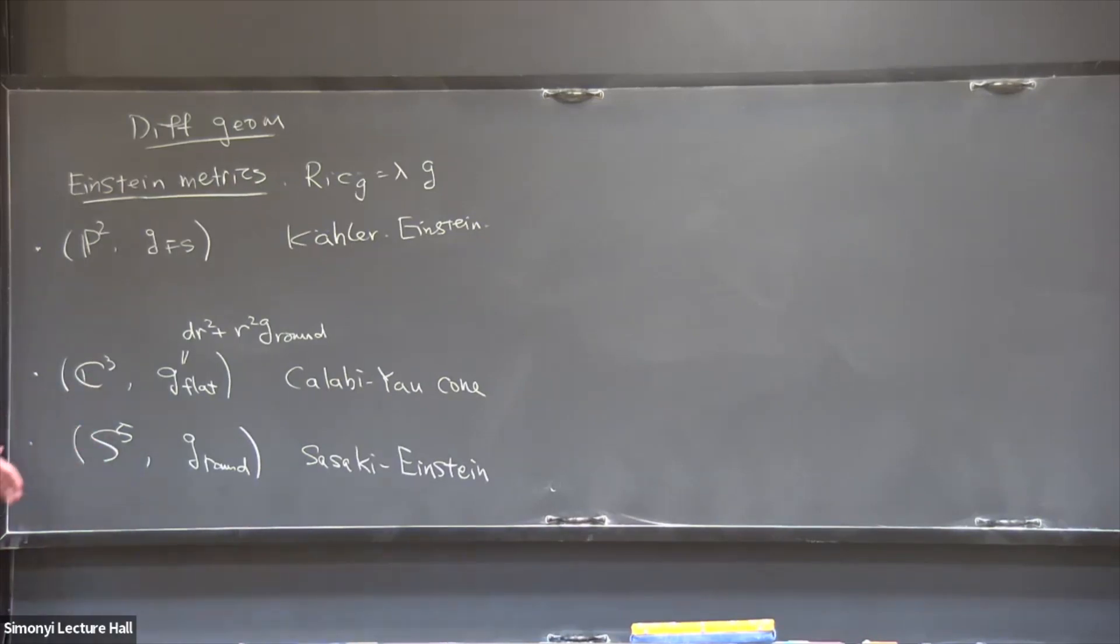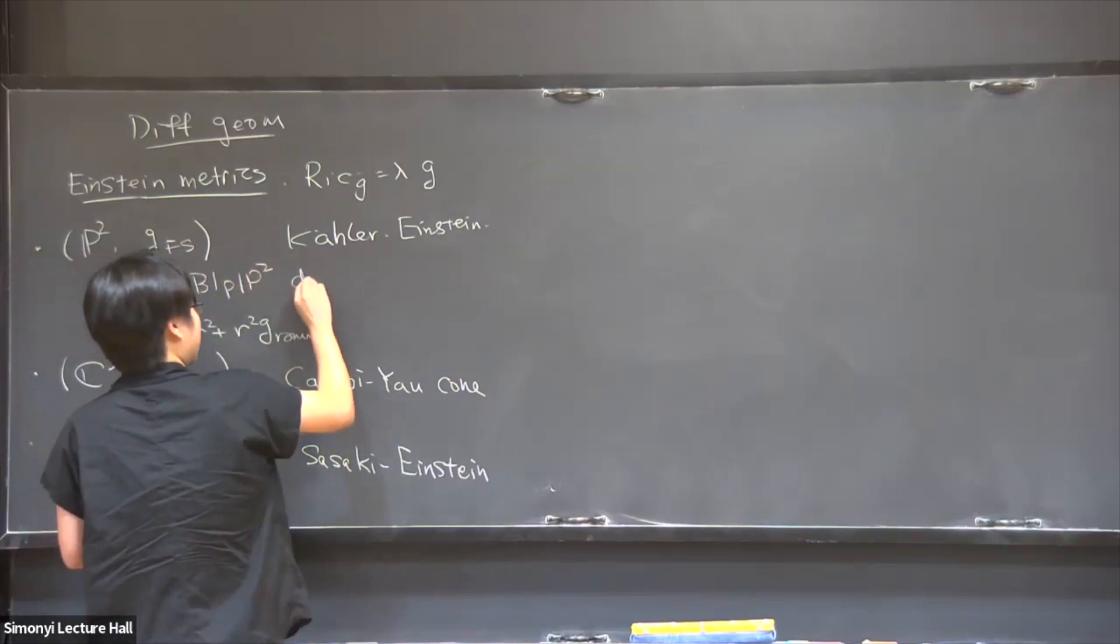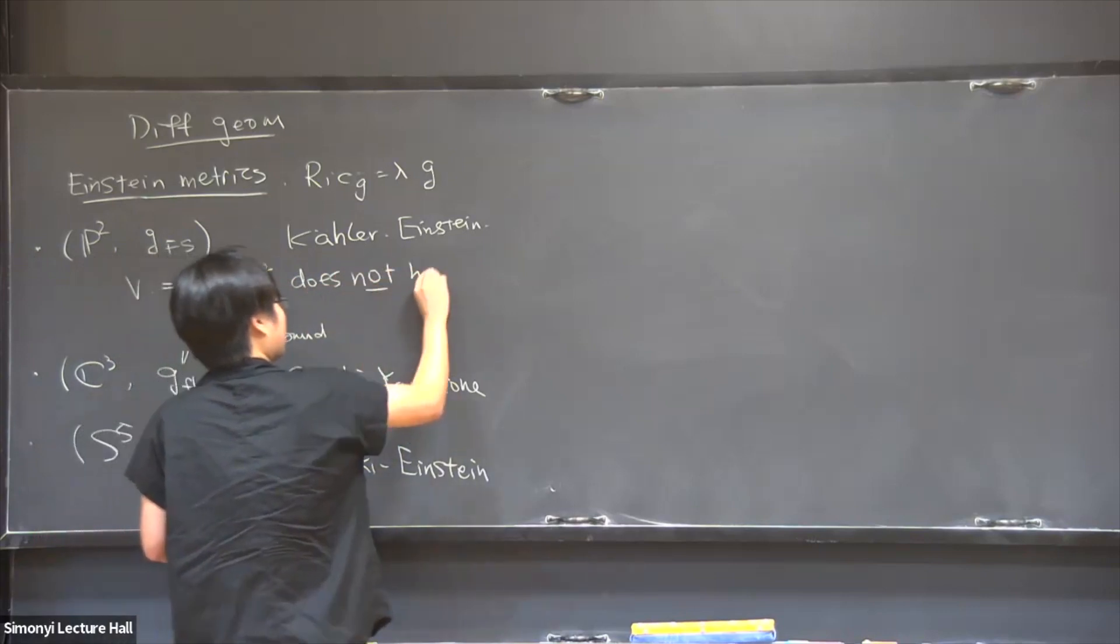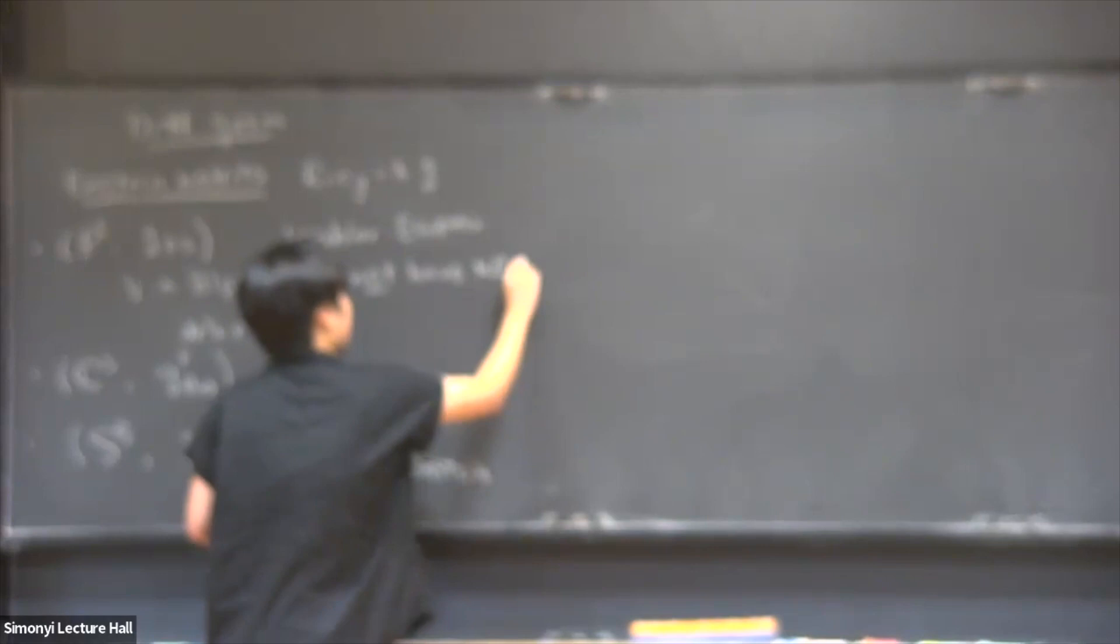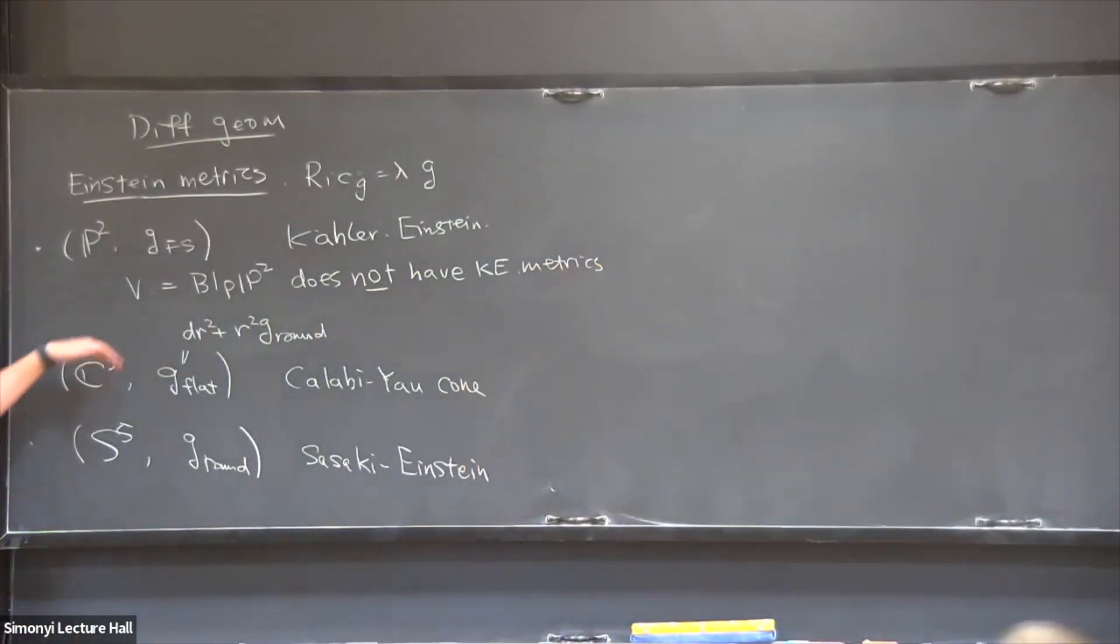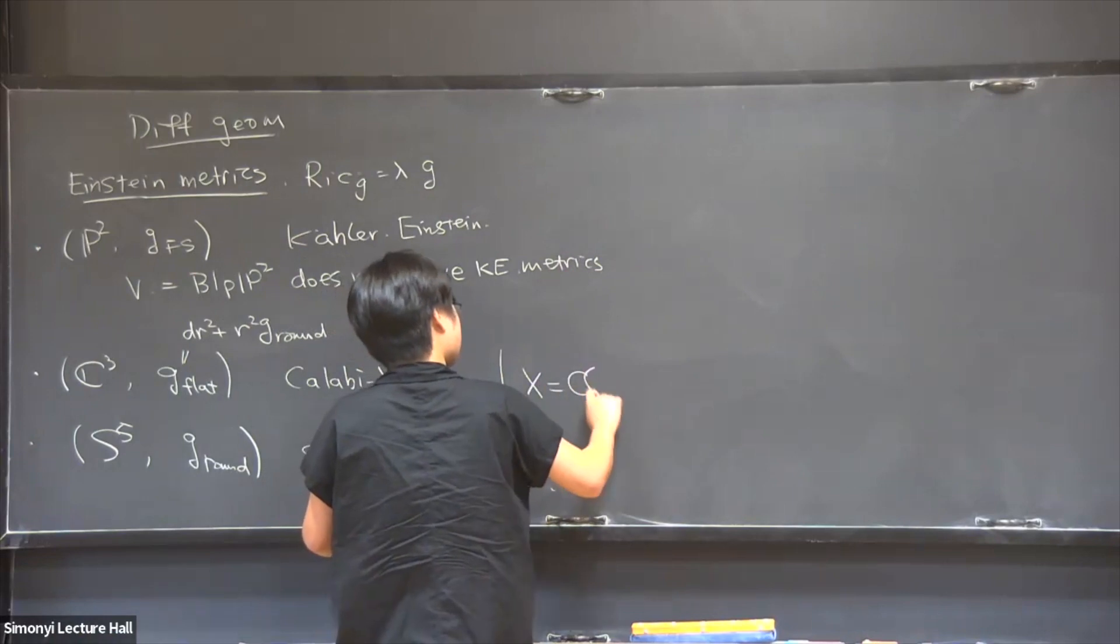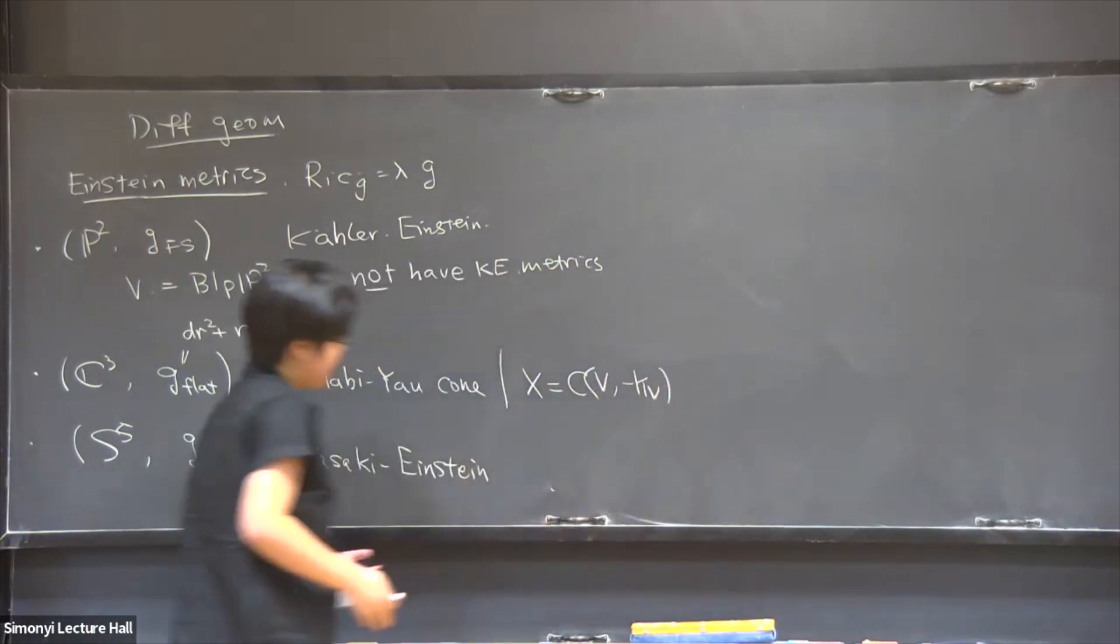So the underlying Riemannian structure is an odd-dimensional real manifold. In this case being S⁵, equipped with the round metric. So it's a cone in the sense that this metric in polar coordinates is really a metric cone over S⁵. So in polar coordinates, you can write down something like this. The Sasaki-Einstein metric, so the Sasaki structure is a contact structure on odd-dimensional real manifolds and somewhat similar to Kähler.